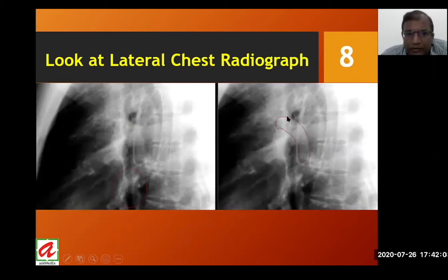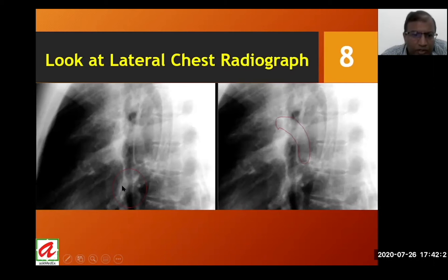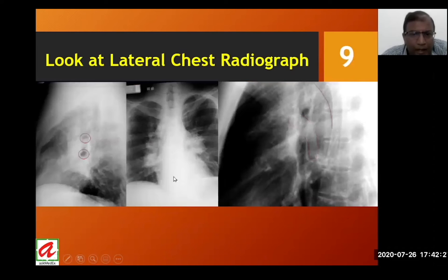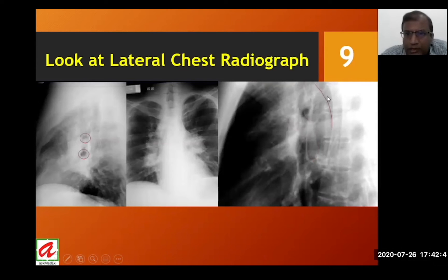There may also be curved opaque structures seen between the lucencies. These are branches of the pulmonary arteries, and we can see smaller branches going to the lobes. A larger curved structure extending from the top of the radiograph posterior to the spine is the arch of the aorta — the most prominent structure that can be easily identified on the lateral view.